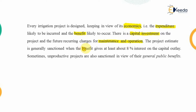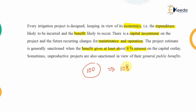A project is generally sanctioned when the benefit gives at least about 8% interest. That means if you are investing 100 rupees on an irrigation project, the return should be equal to 108 rupees — meaning we are getting 8% interest on the capital invested.